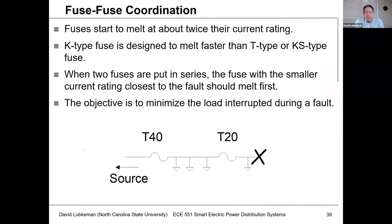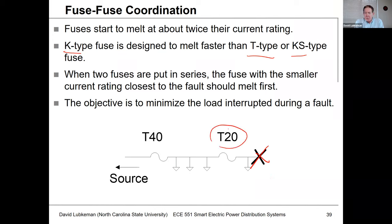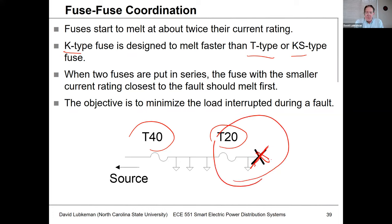Fuse-to-fuse coordination is also possible. Fuses start to melt at twice their current rating. K fuses are the fastest, followed by T and KS types. When coordinating fuses in series — say a T40 upstream and a T20 downstream — for a fault at the far end, the smaller downstream T20 fuse operates first, so upstream customers don't experience an outage. Current levels naturally drop further down the lateral, and with proper coordination, selectivity improves. However, if fuses are very close together, there may not be enough difference in fault current to properly coordinate them.